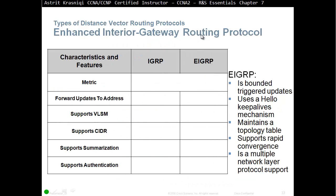The next protocol is EIGRP — Enhanced Interior Gateway Routing Protocol. We can compare it to IGRP, which is legacy and rarely found on devices today. EIGRP uses bounded triggered updates — only when there's a change does it send an update, and only to those neighbors who need to know. It uses a hello/keepalive mechanism to establish and maintain neighbors. EIGRP maintains a topology table, learns routes from neighbors, and picks the best route from the topology table to place in the routing table.